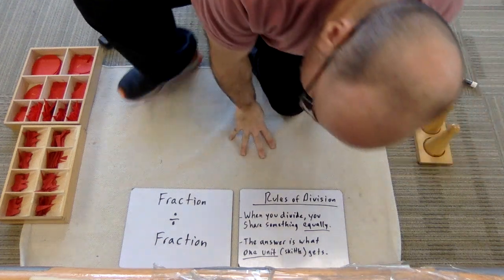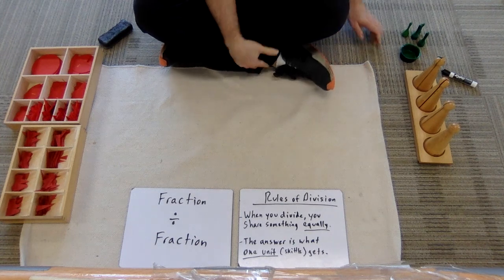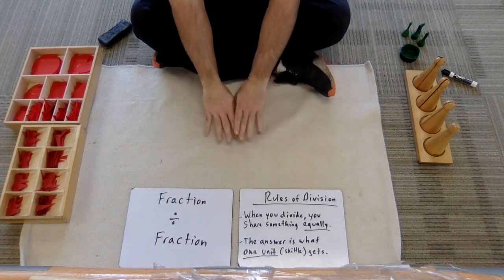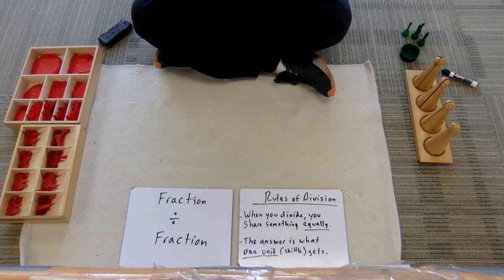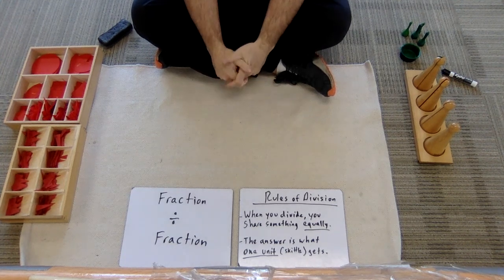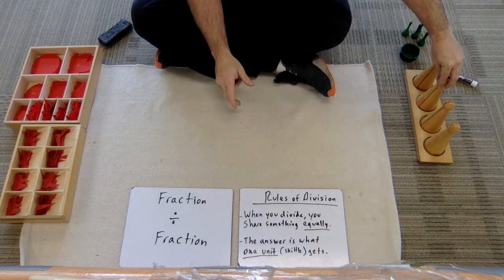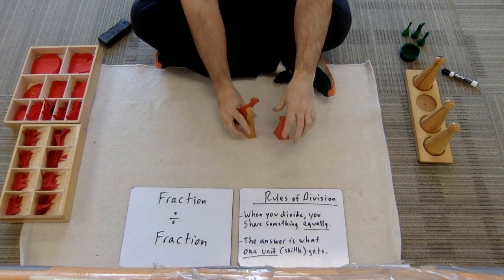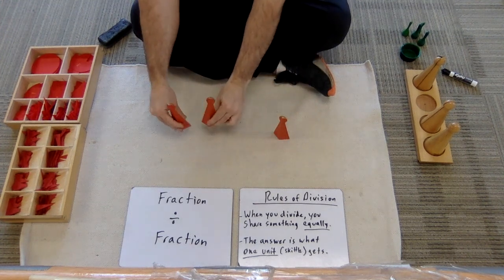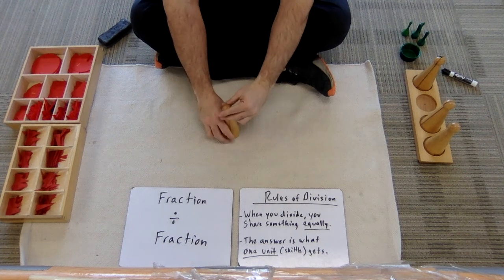Hello kids and welcome to a fraction divided by a fraction with the Montessori materials. This is really cool — one of those presentations that just blows your mind. The key is in the Skittles here: you take a unit, break it apart, and find out what two-thirds of it gets. But the answer is always what one whole gets — three-thirds.